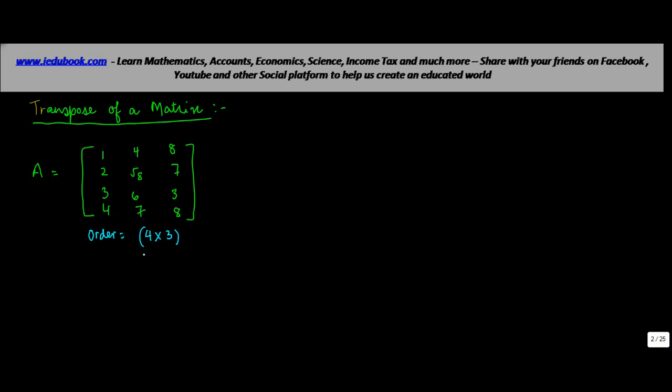Now, when you talk about a transpose of a matrix, transpose of a matrix is basically written as A and then you add on this hyphen to it. What do you mean by transpose of a matrix? Transpose of a matrix is obtained by interchanging the rows and columns.